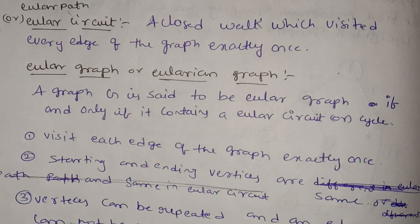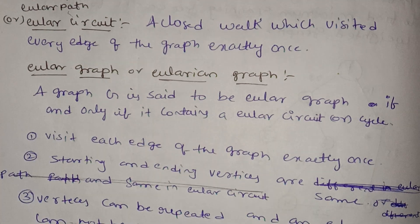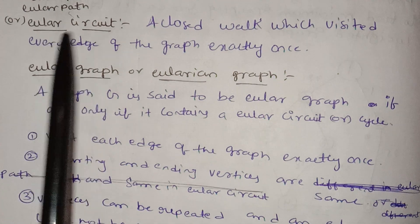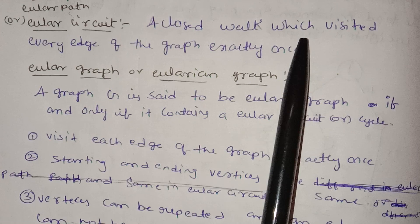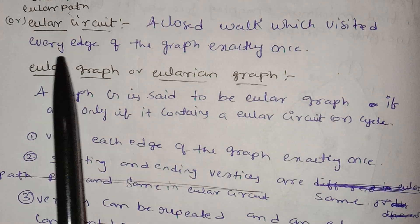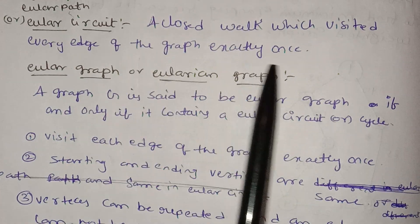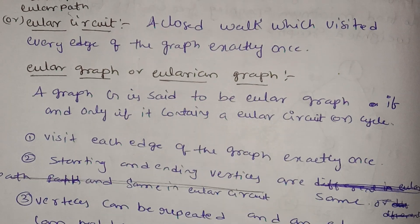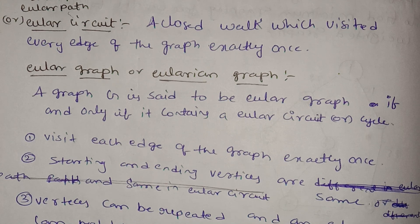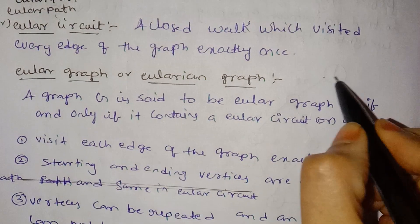Euler's path or Euler circuit: a closed walk which visits every edge of the graph exactly once. Euler's circuit is a closed walk where each edge is visited only once.